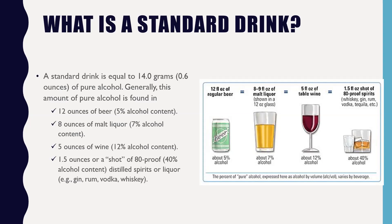One standard drink is 12 ounces of beer at 5% alcohol content, 8 ounces of malt liquor at 7%, 5 ounces of wine at 12% alcohol content, and 1.5 ounces or a shot of 80-proof distilled spirits — gin, rum, vodka, whiskey. The higher the alcohol by volume percentage, the lower the amount you consume to equal a standard drink.